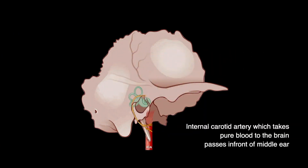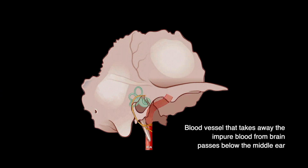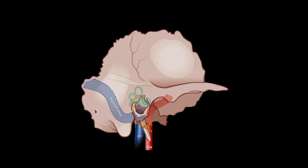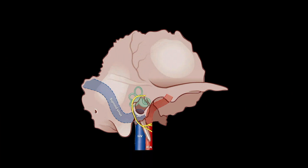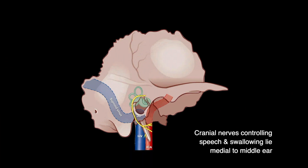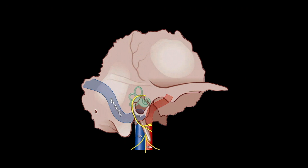The internal carotid artery, which takes pure blood to the brain, passes in front of the middle ear. The blood vessel that takes away impure blood from the brain passes below the middle ear. The facial nerve, which controls facial movement, passes through the middle ear. Cranial nerves controlling speech and swallowing lie medial to the middle ear.